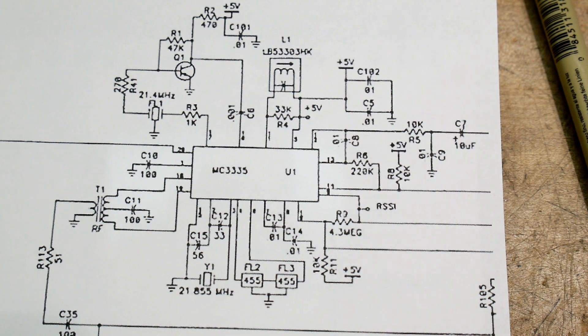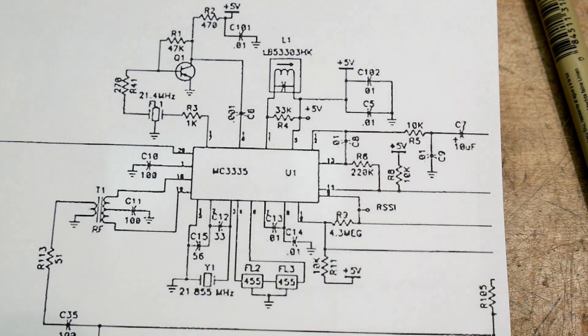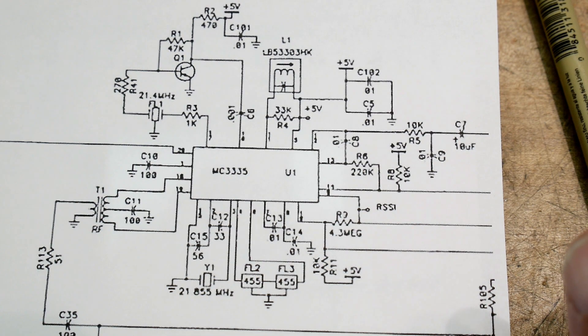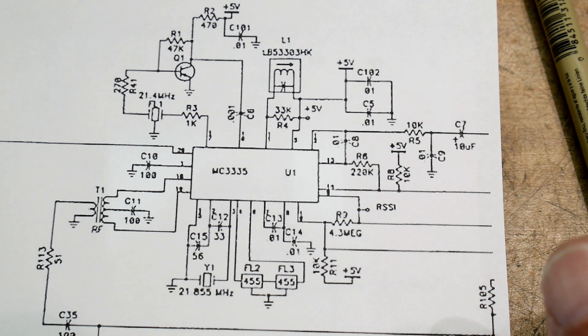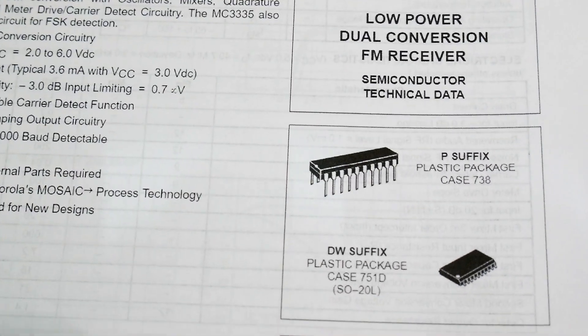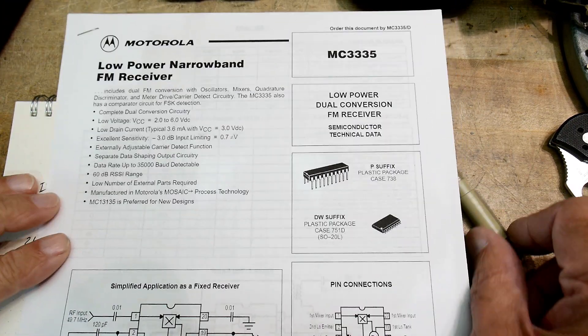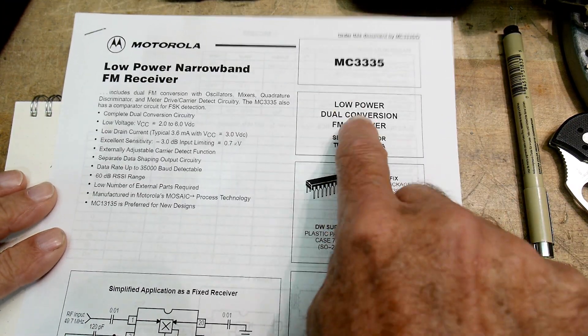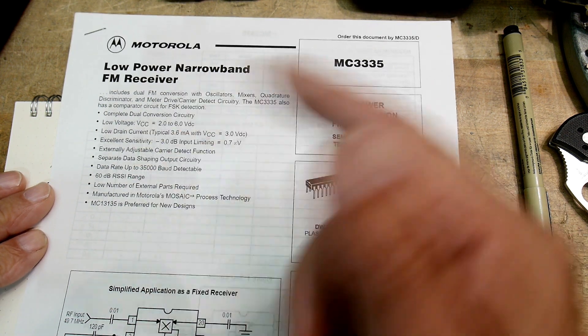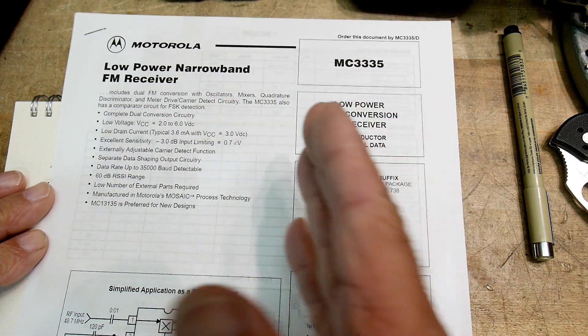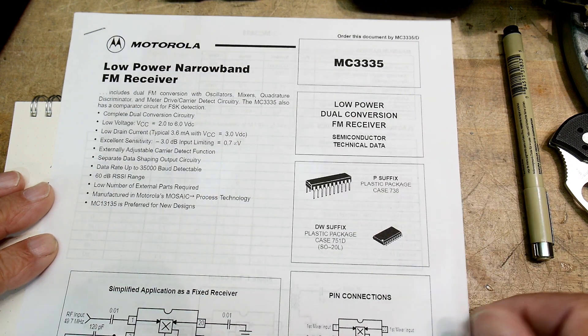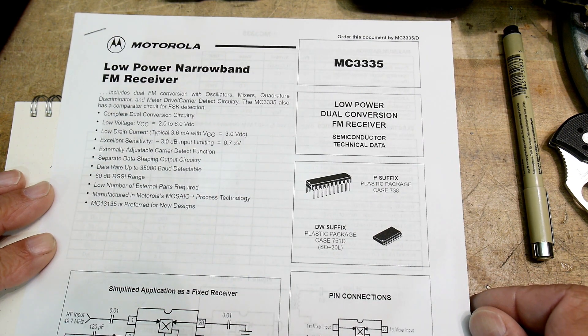It'll get amplified one last time before it goes into the chip, which has lots of stuff on it. So what is this chip? It is a Motorola 3335, and it is an FM receiver on a chip. This must be pretty old, but it's a low power dual conversion FM receiver. Dual conversion means there's going to be two stages of IF. It'll get mixed down twice.